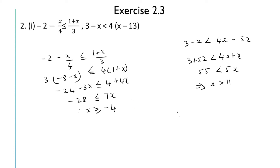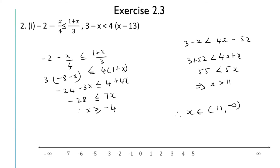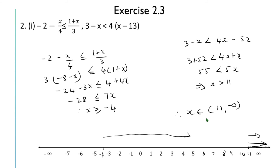The points common to x ≥ -4 and x > 11 will be x > 11. So the solution set is x ∈ (11, ∞). On the number line, x ≥ -4 covers from -4 rightward, and x > 11 covers from 11 rightward; the common region is from 11 to infinity, giving x ∈ (11, ∞).